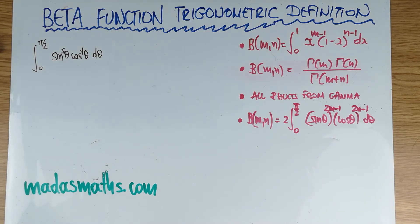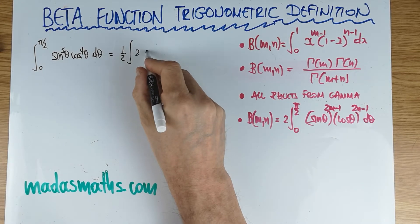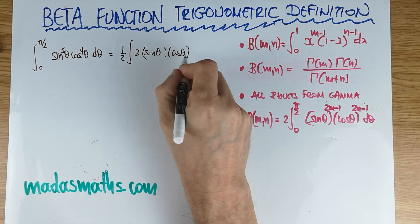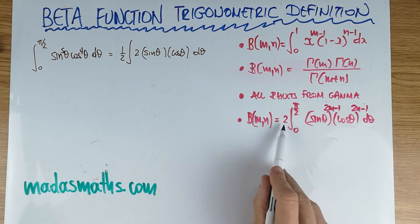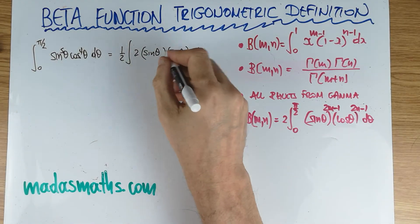Today we're going to deal with the beta function. Without the beta function, for something like this, either we have to get a reduction formula with sine and cos both of them in, or perhaps use complex numbers, which is going to be even longer. It's a nightmare. But we can actually write it as a half, 2 lots, of sine theta and cos theta d theta. Half times 2 cancel. This is the 2 in the definition.